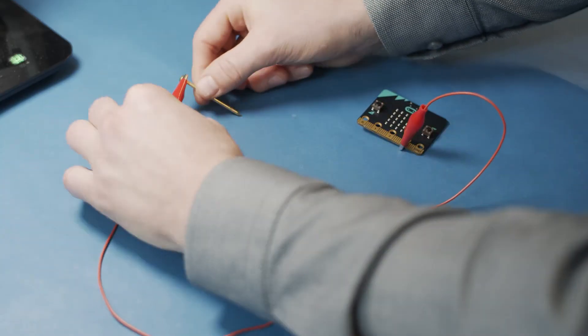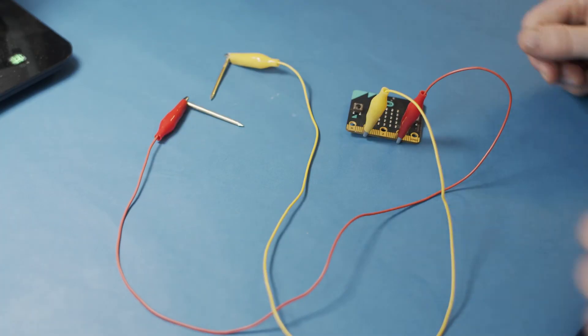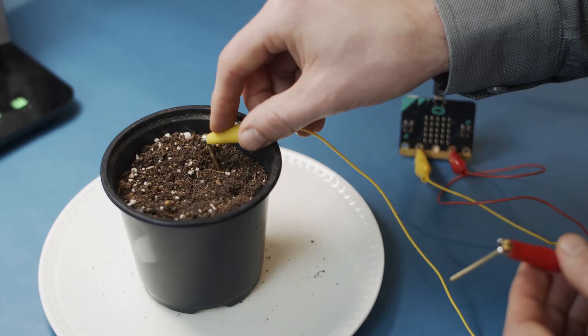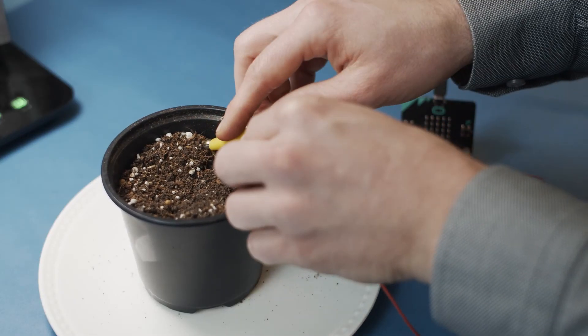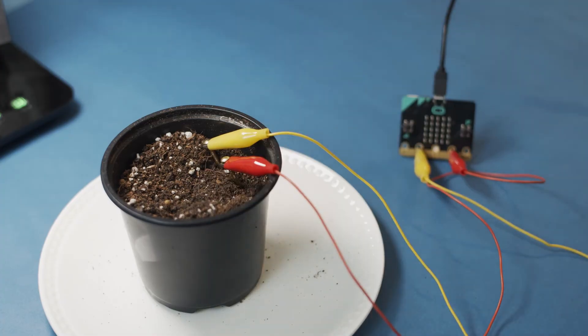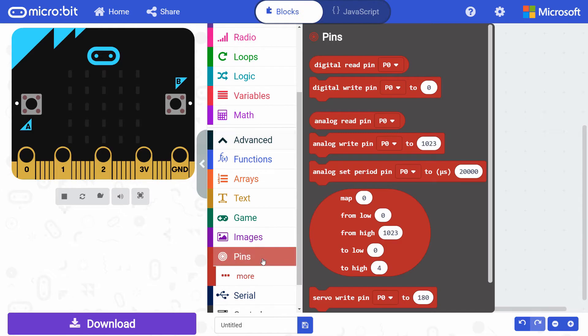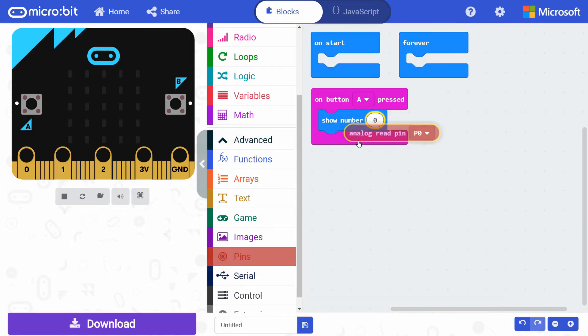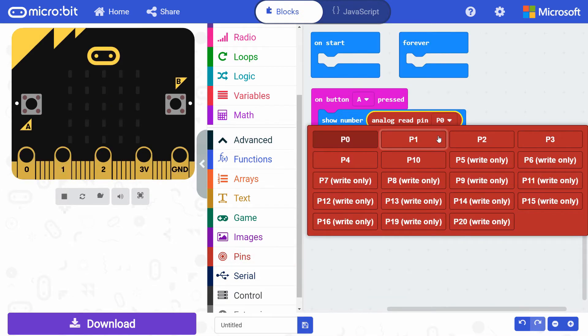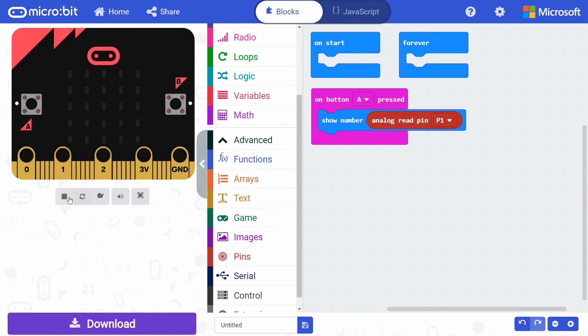First, use some alligator clips to connect two nails to the 3 volt pin and pin 1 on the micro:bit. Start with some dry soil, and insert these nails into your soil. Make sure they don't touch, or you'll short them together. In MakeCode, drag an on button pressed block from input to the workspace. Get a show number block from basic, and snap it inside the on button pressed block. Click on advanced, and go to pins. Get an analog read pin block, and put it inside the show number block. Finally, change the pin from P0 to P1, as we have one of the nails connected to that pin.